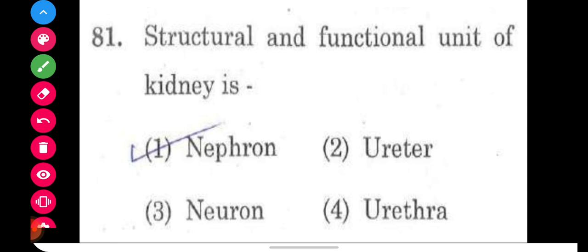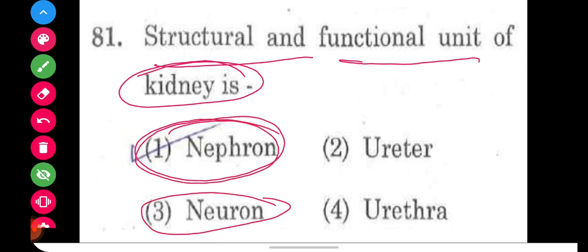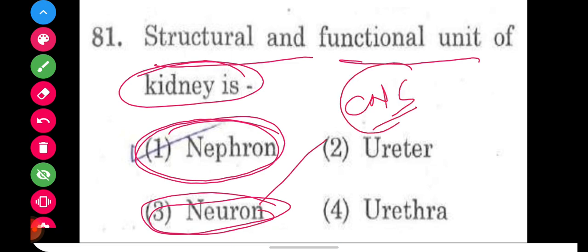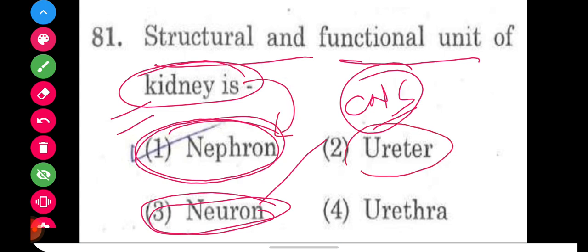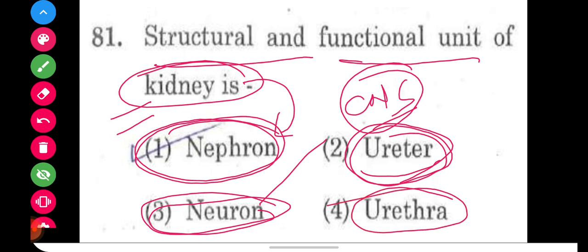Question number 81: what is the structural and functional unit of the kidney? The answer is nephron. Neuron is the unit of the central nervous system (CNS), not the kidney. The kidney plays a role in excretion, and its unit is the nephron. Urethra is a tube-like structure attached to the kidney that aids in conduction of urine and passage of gametes, but it is not the functional unit. The right answer is option number one, nephron.